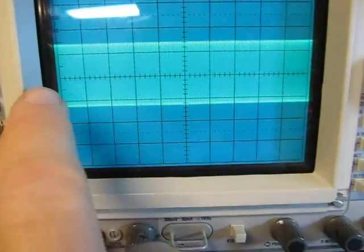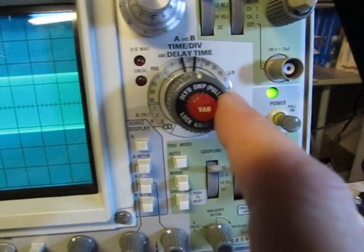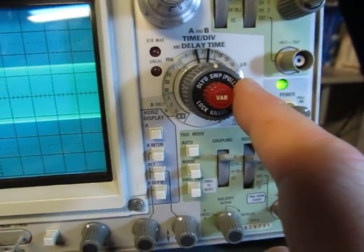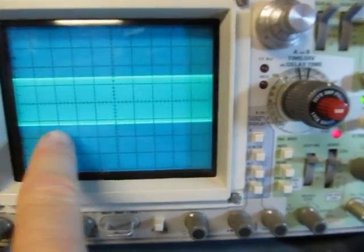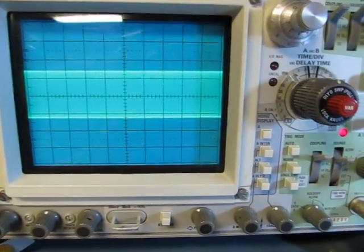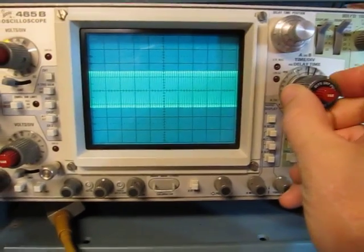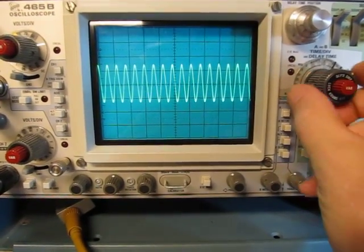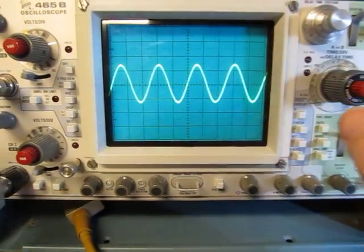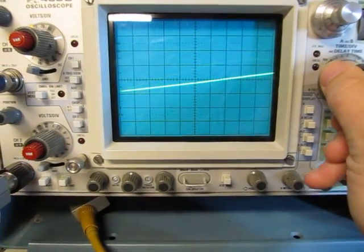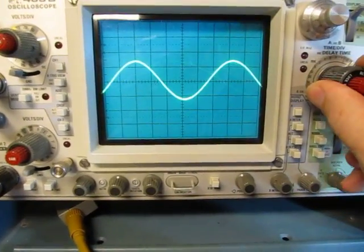Now we need to adjust our horizontal time base. The horizontal time base on the scope basically controls how quickly we're moving the beam across the screen. And the faster we move it, the more we'll stretch out the waveform. So you'll notice I'm turning this up faster and faster. I'm stretching that waveform out further, further, further. So how fast do we want to go?